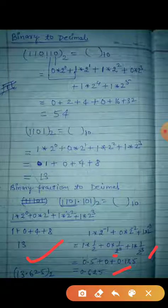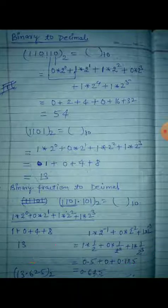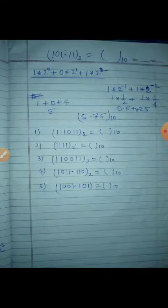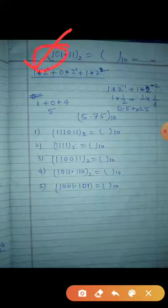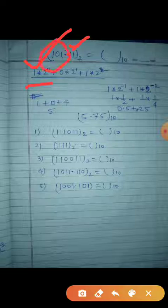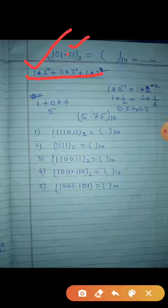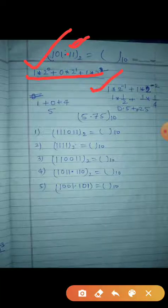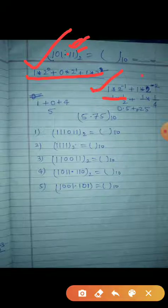So the final answer is 13.625. Now come to the second example. After the point, the value given here is 1 and 1. So: 1 into 2 to the power minus 1, plus the next value 1 into 2 to the power minus 2.